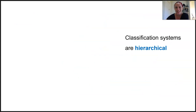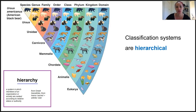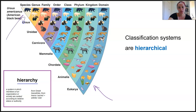Classification systems for organisms are considered hierarchical, and that shows that there are layers of relatedness. Within the really high layers, there's really broad information and they're more inclusive — quite a number of different species fit inside them — while the lower levels are less inclusive and they contain really specific information.